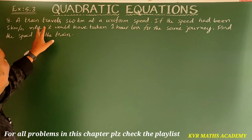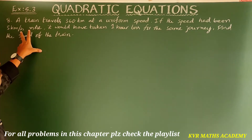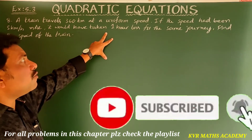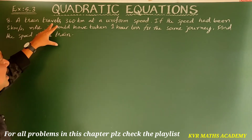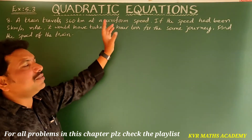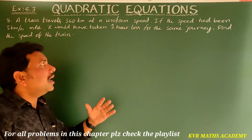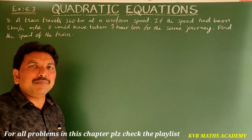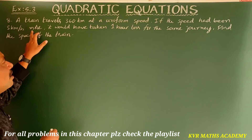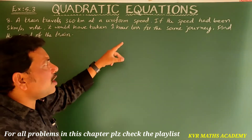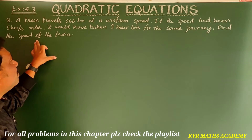Next, the 8th question. A train travels 360 kilometers at a uniform speed. If the speed had been 5 kilometers per hour more, it would have taken 1 hour less for the same journey. Find the speed of the train.